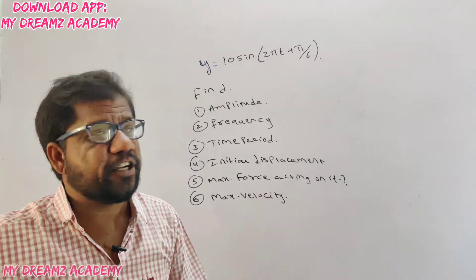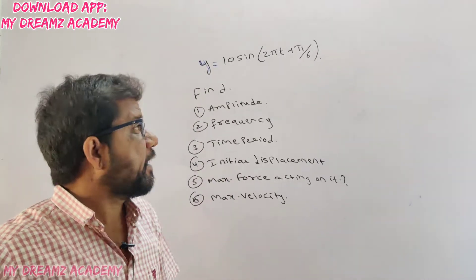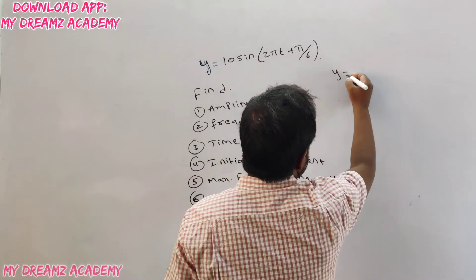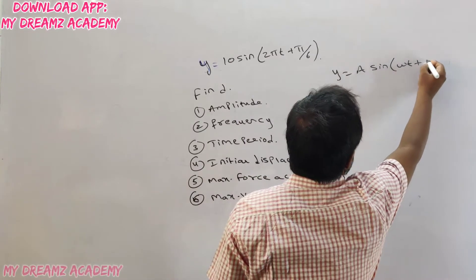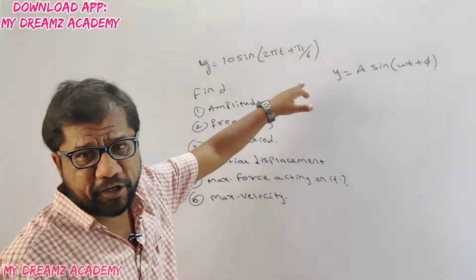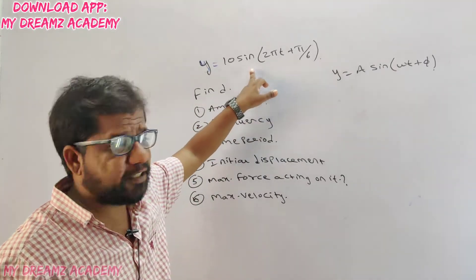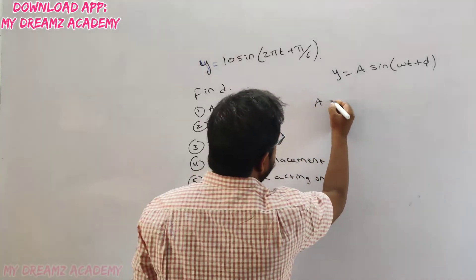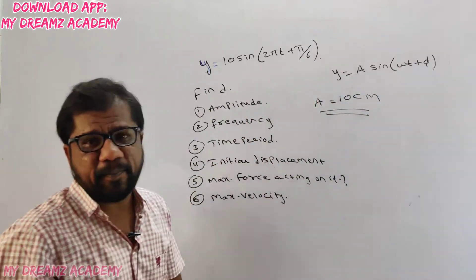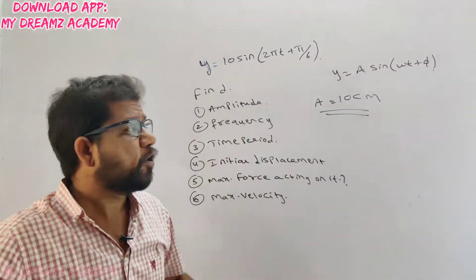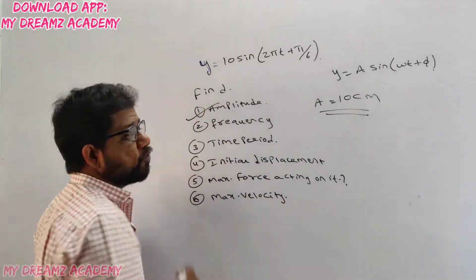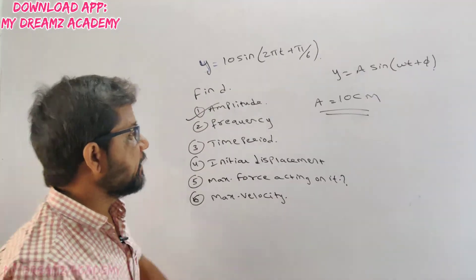Look carefully at the equation: y = 10 sin(2πt + π/6). We compare it to the standard form y = A sin(ωt + φ). From this, amplitude A = 10. Assume it is 10 centimeters — if the equation gives meters the answer will be in meters, but usually it is given in centimeters. So amplitude = 10 cm. First question is done. Next, find frequency.